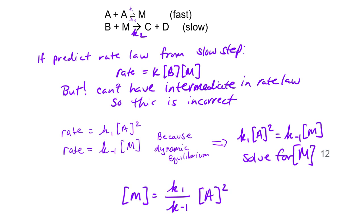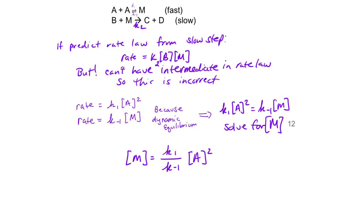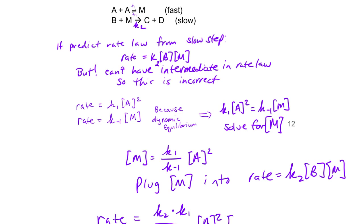I'm going to put K2 as I forgot to put that there last time. So now we're going to plug M into rate equals K2 times B times M - that's from above, from the predicted rate law from the slow step. We're going to end up with rate equals K2 times K1 over K minus 1 times A squared times B.